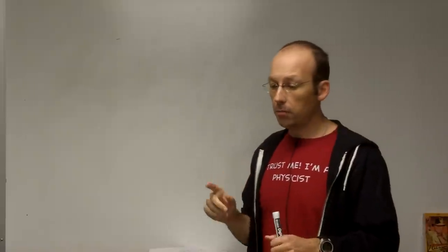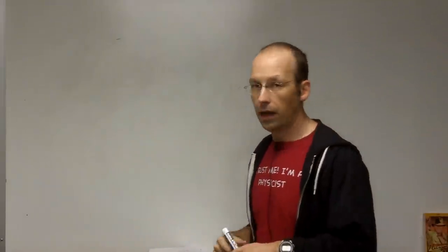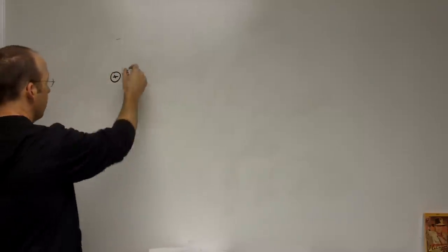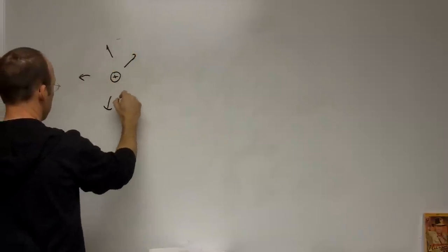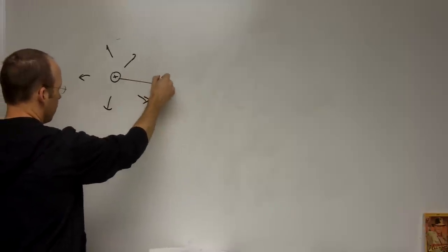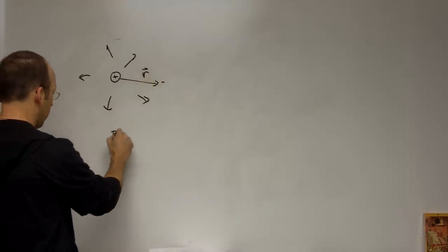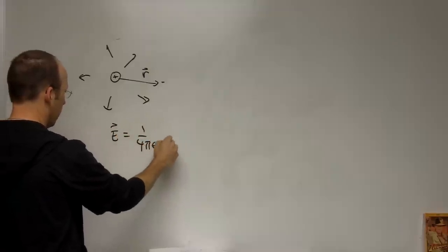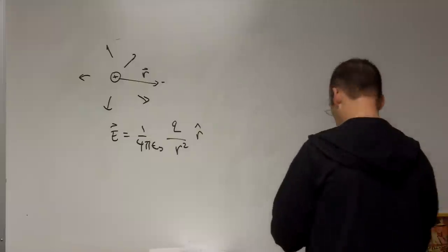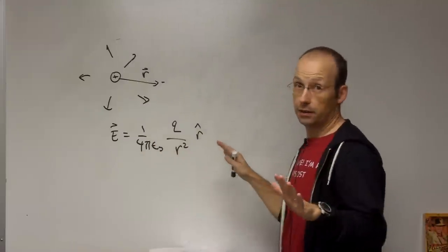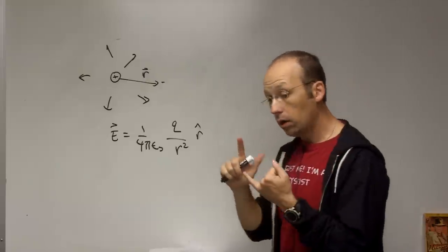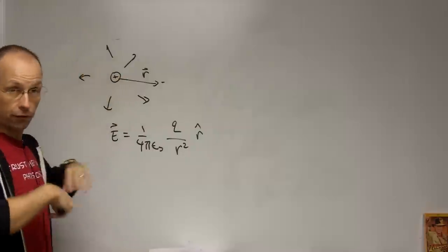Chapter one is about the electric field. If I have a positive point charge, the electric field goes outward in all directions; if negative, it goes inward. I can describe the electric field at any location a vector r away as E equals one over four pi epsilon naught, q over r squared, r hat. The constant one over four pi epsilon naught, q is the charge, r is the distance magnitude, and r hat is the unit vector outward.